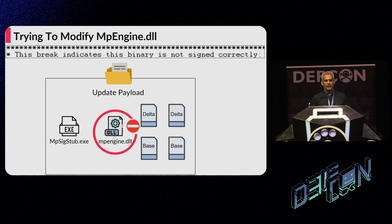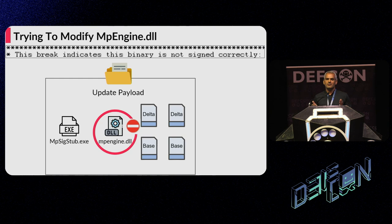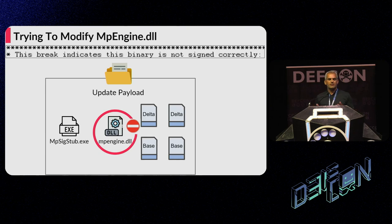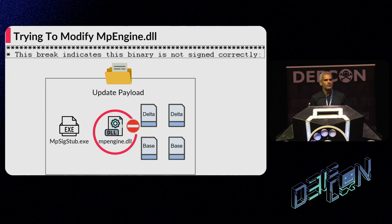During kernel debugging, we got an exception telling us that the DLL is not signed. This protection is implemented because Defender's main process is a protected process — a PPL process — which cannot load unsigned DLLs. At that point, we thought: is this the end of our research lead?